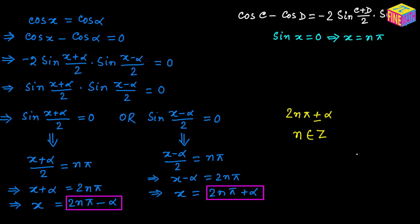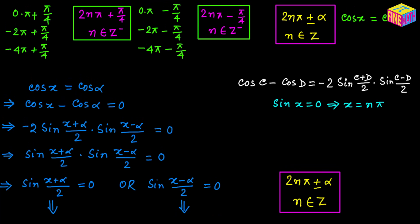That is the general solution of x derived using pure trigonometric formulas. Comparing this with the previous result derived from the unit circle, you will see they look identical — the two pink boxes match. No matter which method you use, the general solution is x equals 2n times pi plus or minus alpha, for the equation cosine of x equals cosine of alpha where alpha is a known angle.